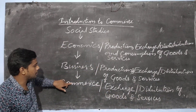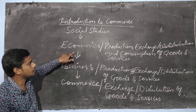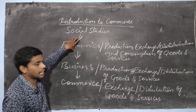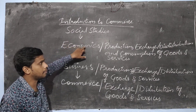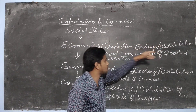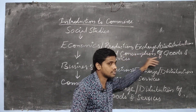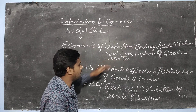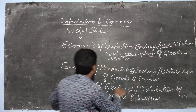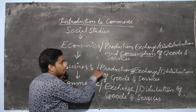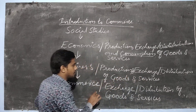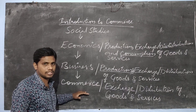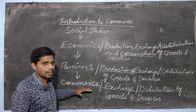So to summarize: economics is production, exchange or distribution, and consumption of goods and services. If we remove the word 'consumption,' we get business — production and exchange of goods and services. If we then remove the word 'production,' we get commerce — exchange or distribution of goods and services. That is commerce.